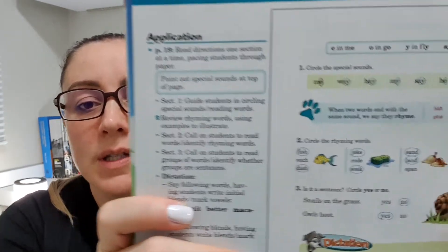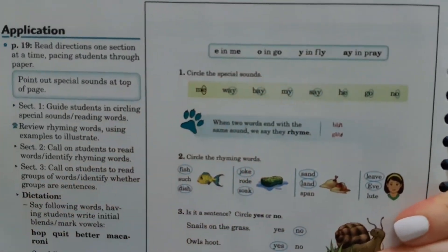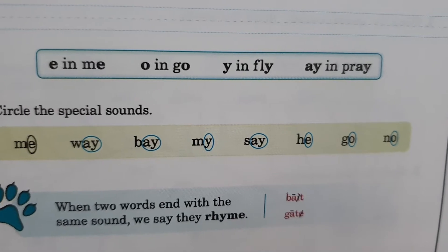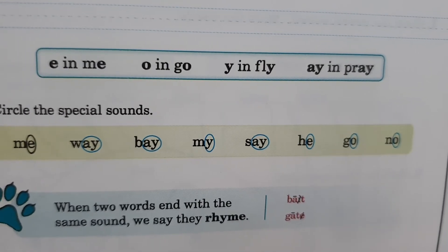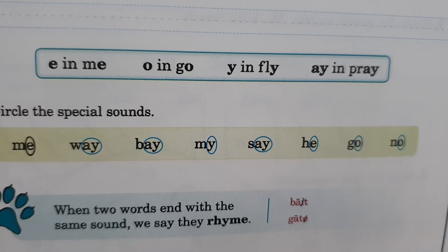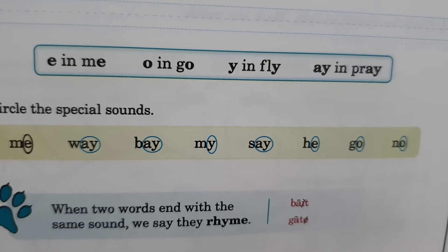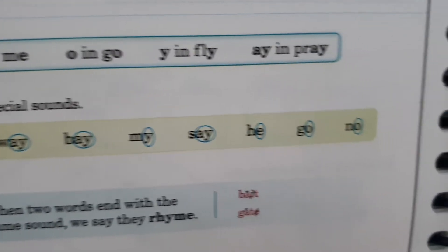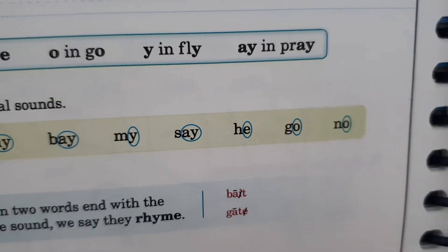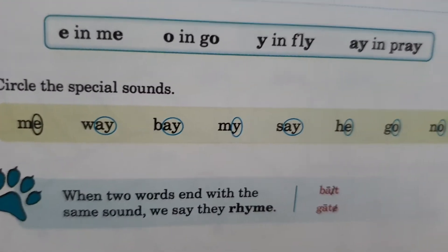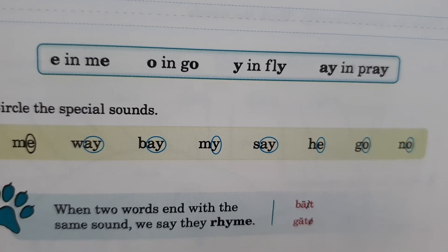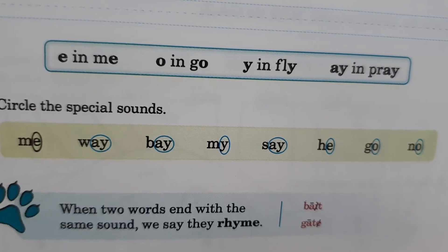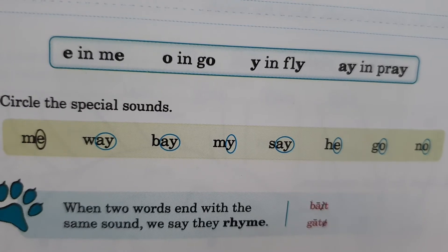Será que ficou assim o de vocês? Olhem aqui. Way, que nem pray. Bay, como pray. My, como em fly. Say, em pray, que nem pray. He, como em me. Go, já estava ali em cima. E no. Então, na aula vocês vão ler essas palavras alto pra mim. Treinem então: me, way, be, my, say, he, go.